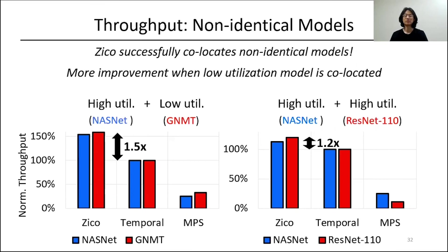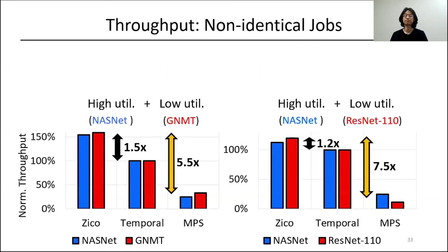Looking at MPS comparisons, with batch sizes set so that MPS exceeds GPU memory, ZICO achieves 5.5 times and 7.5 times higher throughput respectively. This mirrors the identical job result: MPS easily exceeds GPU memory because it lacks a memory sharing technique, resulting in significant throughput degradation.